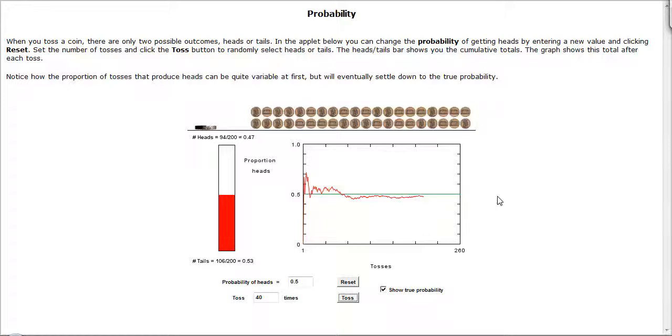And the theoretical probability, which says when you run this over a very long period of time, what is the number of successes divided by the total number of possible outcomes in your sample space?